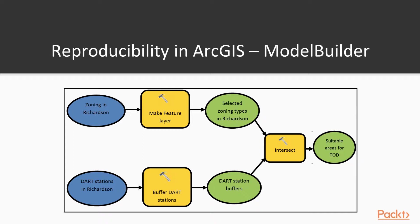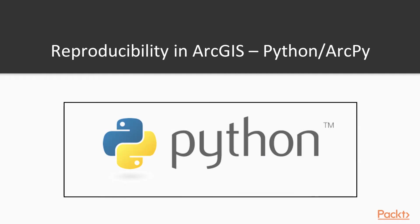Another common option for reproducibility and automation in ArcGIS is Python scripting, and along with that, the site package for Python that ships with ArcGIS: ArcPy. Python is one of the most popular open-source programming languages out there, used in applications from website development to data science to, notably, GIS. Python is the language you'll use to script your GIS workflows, and the ArcPy site package includes a wide range of functions for automating and calling GIS functionality within Python. We'll explore some of this functionality in an upcoming video.